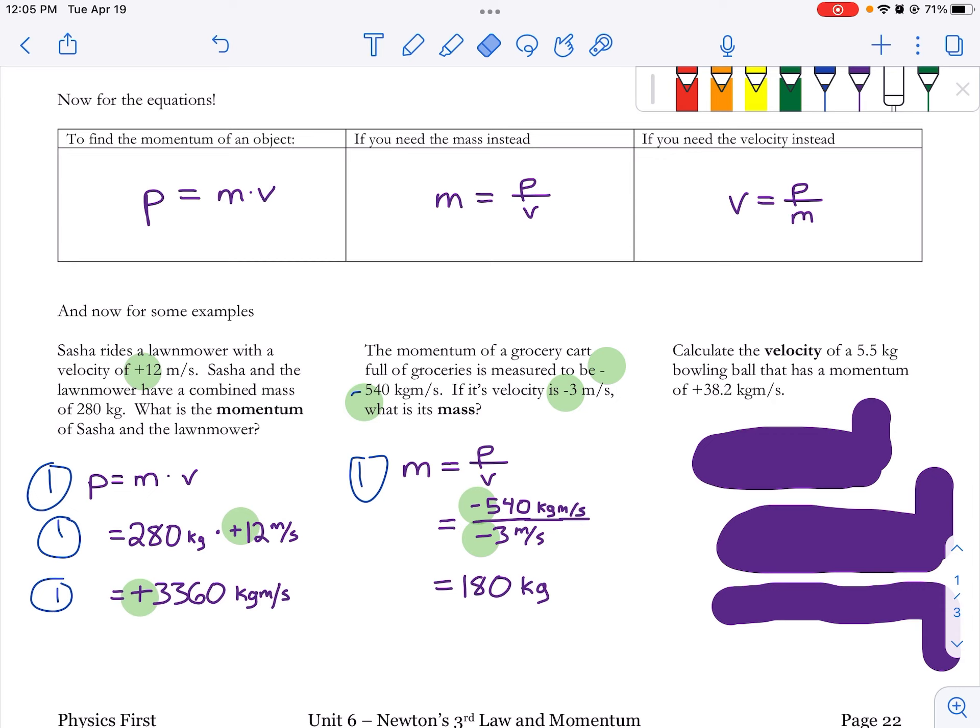This question says, calculate the velocity of a 5.5 kilogram bowling ball that has a momentum of plus 38.2 kilogram meters per second. Again, there it is with that direction right here. That plus is the direction. Velocity has direction, so this answer is going to have to have a direction on it.